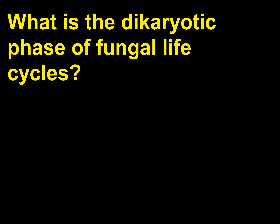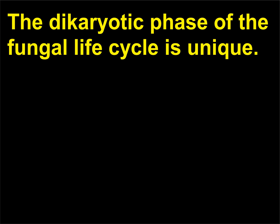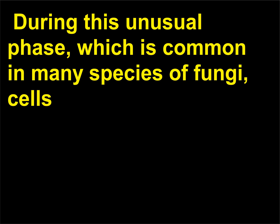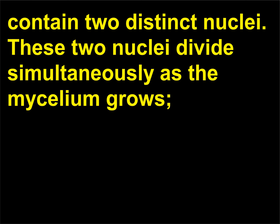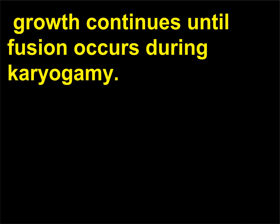What is the dikaryotic phase of fungal life cycles? The dikaryotic phase of the fungal life cycle is unique. During this unusual phase, which is common in many species of fungi, cells contain two distinct nuclei. These two nuclei divide simultaneously as the mycelium grows. Growth continues until fusion occurs during karyogamy.